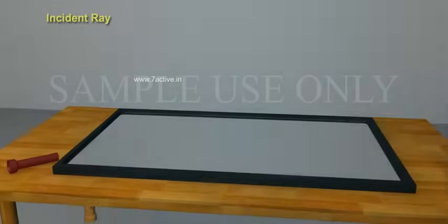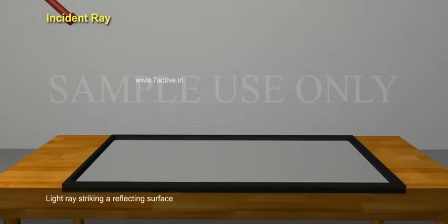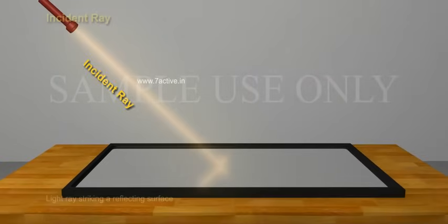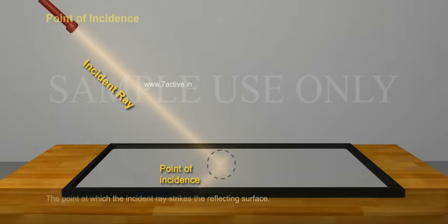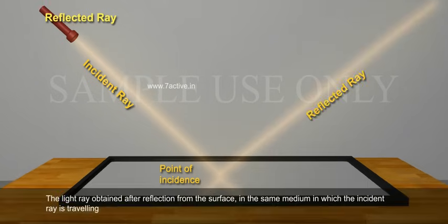Incident ray: Light ray striking a reflecting surface. Point of incidence: The point at which the incident ray strikes the reflecting surface. Reflected ray: The light ray obtained after reflection from the surface in the same medium in which the incident ray is traveling.